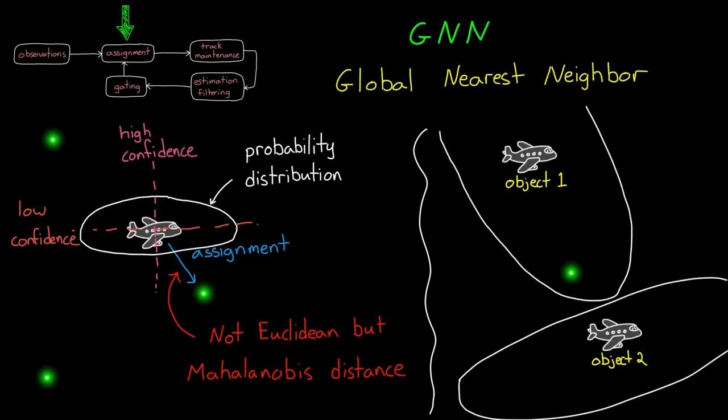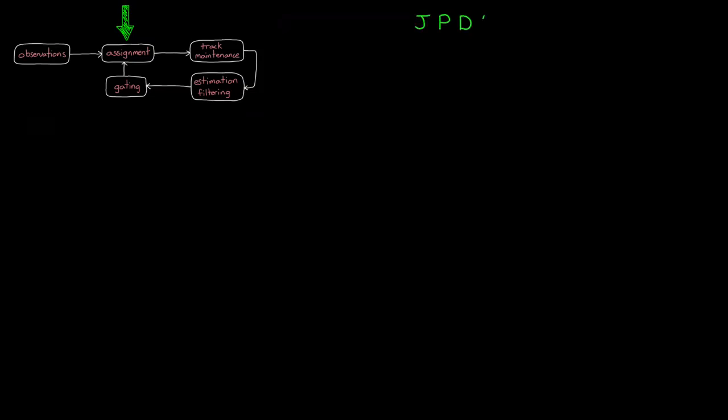And this is what the Mahalanobis distance does for us. It's the distance normalized by the standard deviation. Now, GNN works well for sparsely distributed objects, but for cluttered objects, another assignment algorithm like the JPDA or Joint Probabilistic Data Association algorithm will be better.